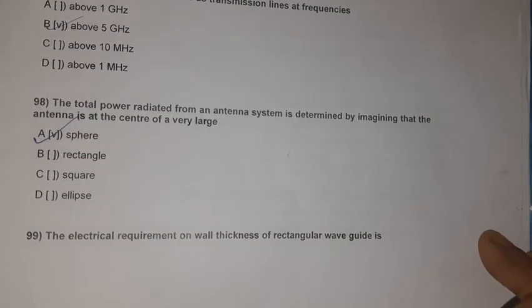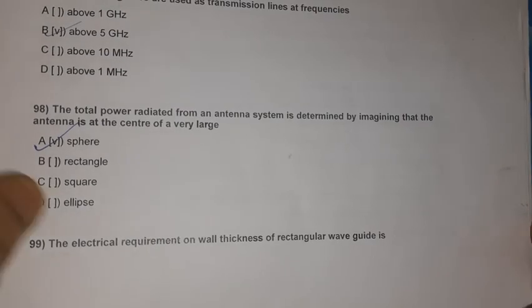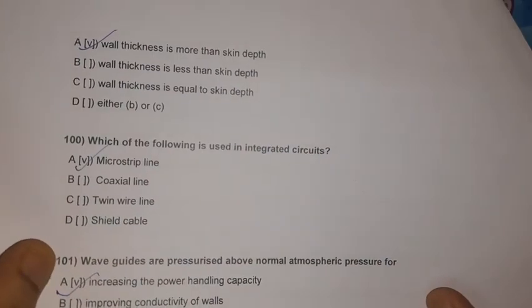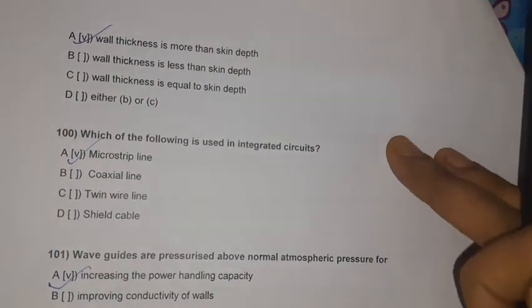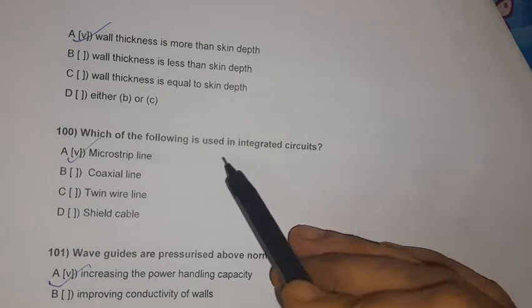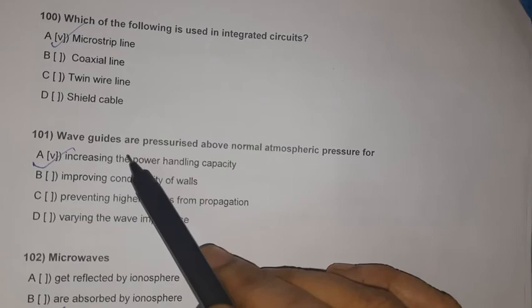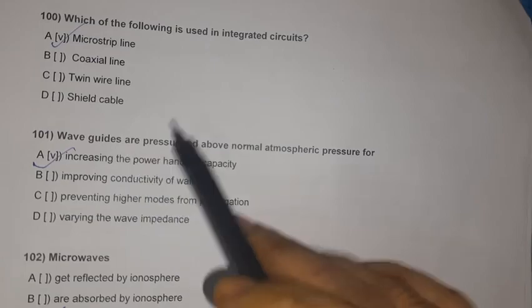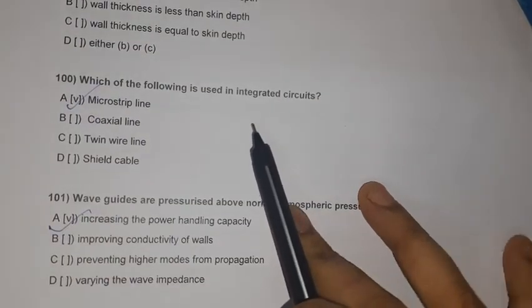Question 97: The wall thickness of rectangular waveguides should be greater than the skin depth. Question 98: In integrated circuits, microstrip lines are used.